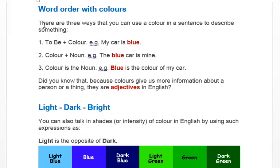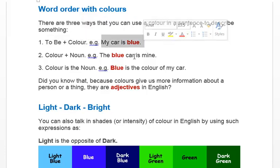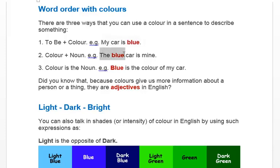You can use colours in a sentence to describe something. For example: to be plus colour — 'My car is blue.' Colour plus noun — 'The blue car is mine.' And colour as a noun — 'Blue is the colour of my car.' Blue becomes the noun here.